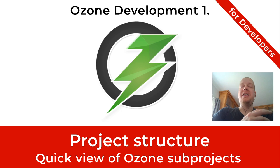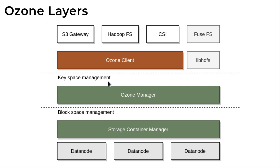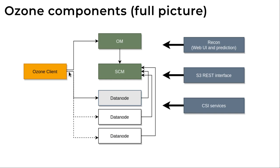Let's start with understanding what's in the GitHub Ozone repository. As we discussed earlier, we have two separated layers. One is the Hadoop Distributed Data Storage, which is the block space management — nothing more than replicating huge binary blobs. Here we have a primary server called the Storage Container Manager and a few data nodes. On top of it, we provide object store semantics, and the Ozone Manager is the primary server there, which can assign keys to specific binary blobs or blocks replicated by the low-level layer.